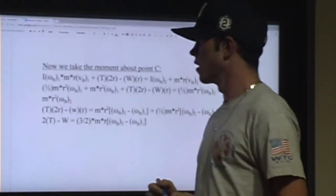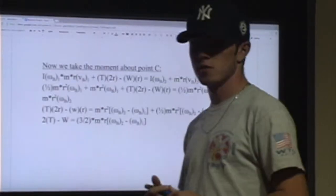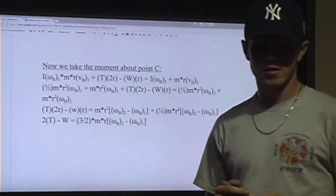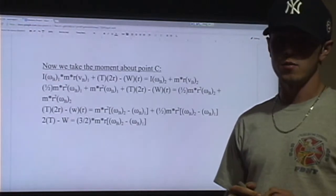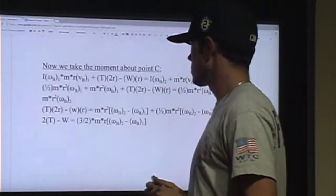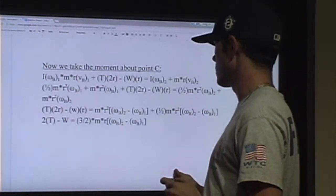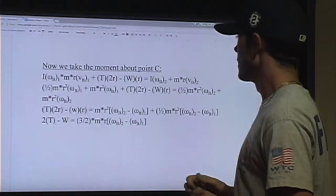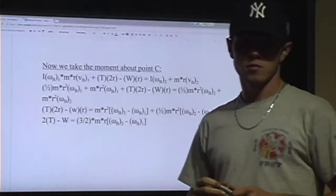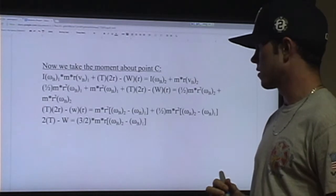Now, after finding the equation for tension, we're going to take the moment of point C. That implies that the moment of inertia times the angular velocity of B in the first state, plus the mass times the radius times the angular velocity of B in the first state, plus the tension times 2 times the radius minus the weight times the radius, equals the moment of inertia times the angular velocity of B in the second state, plus the mass times the radius times the angular velocity of B in the second state.